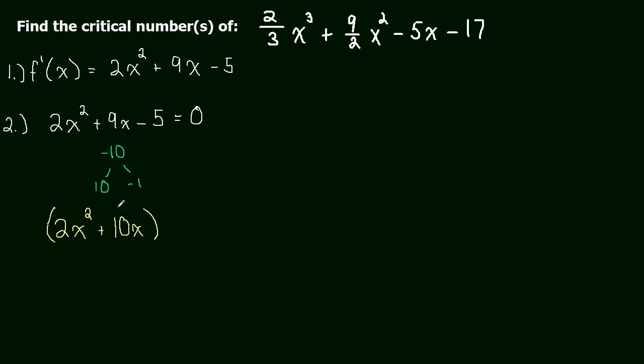I'm just going to go ahead and keep doing it this way, though. And then we add to that the next group, which is going to be negative 1, with an x tacked on, minus 5.